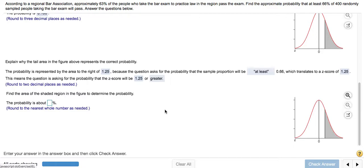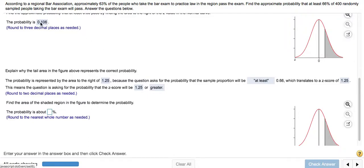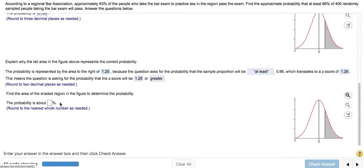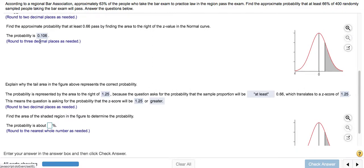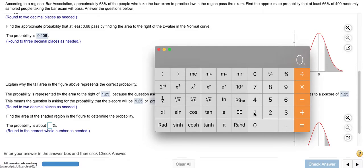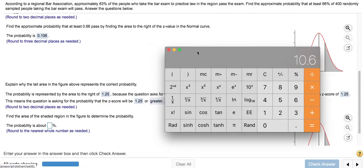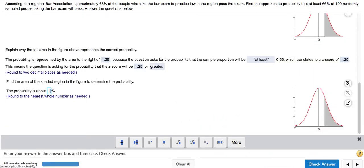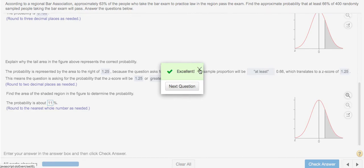The last part of this problem is saying find the area of the shaded region in the figure to determine the probability. We actually already did this part - it's this value right here. I think the only difference is they're now saying record this as a percent, but also round to the nearest whole number. So we're going to take that value, which was 0.106, and to convert it to a percent, you would multiply it by 100. If we're rounding to the nearest whole number, that would round up to 11. So it's about 11 percent. And that's it for this problem.